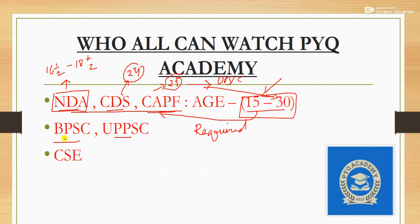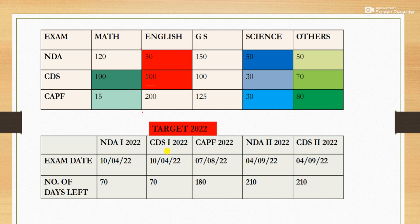Let's have some analysis of the NDA examination. The main subjects are Mathematics and General Studies. In mathematics there are 120 questions, and in GS there are 150 questions — consisting of 50 questions of English, 50 questions of Science, and 50 questions from other topics.